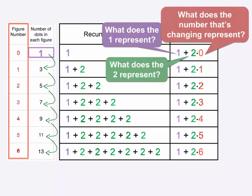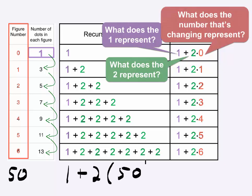This fact turns out to be pretty handy. We can take any figure number — let's choose 50 — and use the figure number to get the number of dots. Start with 1, then add 2 times the figure number of 50, because we are adding fifty 2's. Using the order of operations, we get 101. So the 50th figure has 101 dots.